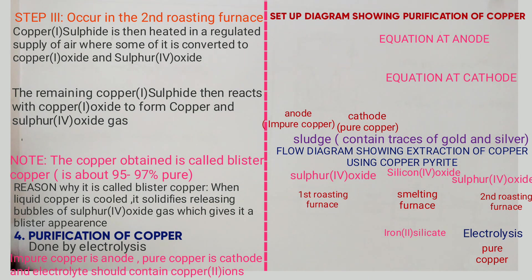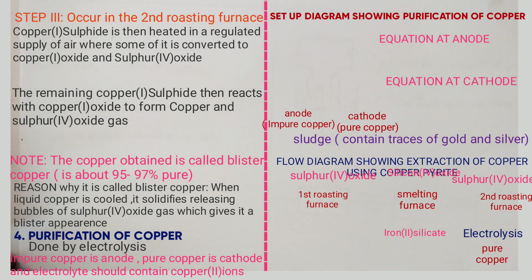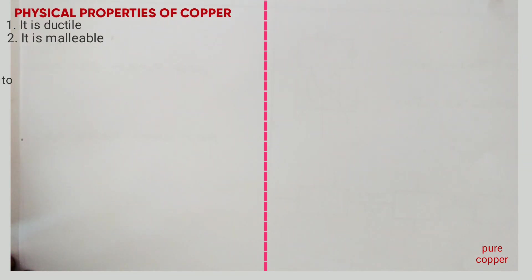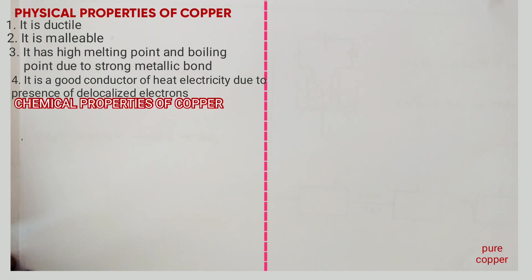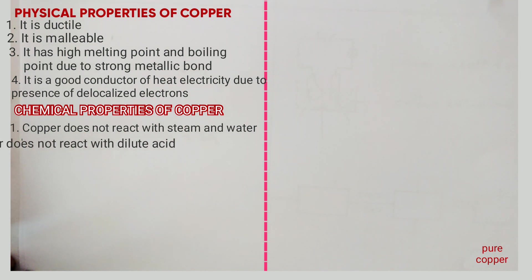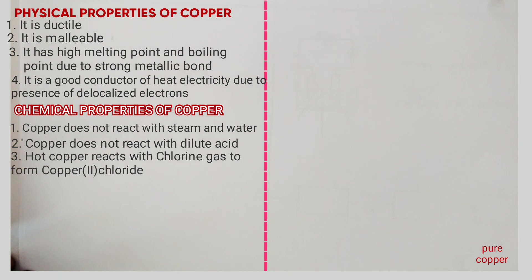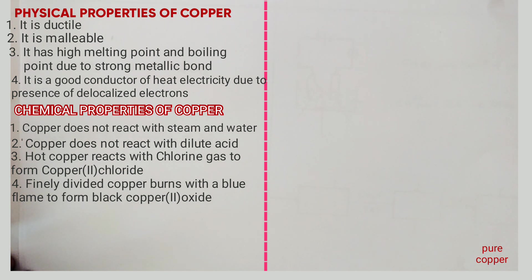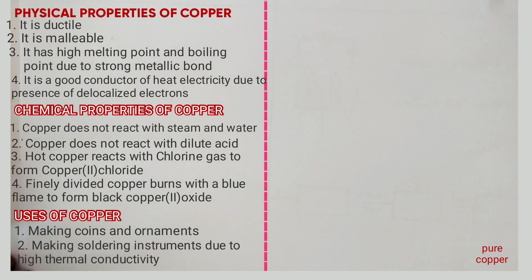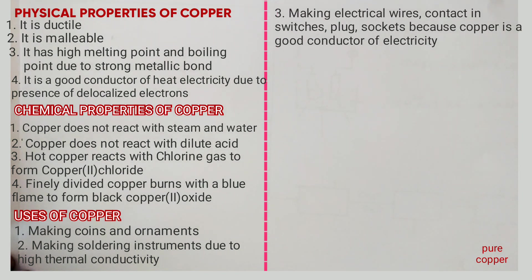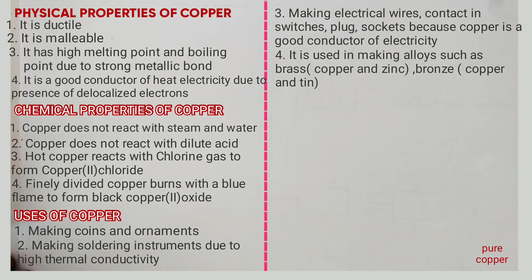The properties of copper include: it is ductile, it is malleable, it has high melting and boiling points due to strong metallic bonds, and it is a good conductor of heat and electricity due to the presence of delocalized electrons. Chemical properties include: copper does not react with steam or water, copper does not react with dilute acids, hot copper reacts with chlorine gas to form copper two chloride, and finely divided copper burns with a blue flame in air to form black copper two oxide. Uses of copper include making coins and ornaments, soldering instruments due to high thermal conductivity, electrical wires, conducting switches, plugs and sockets, and making alloys such as brass (copper and zinc) and bronze (copper and tin).